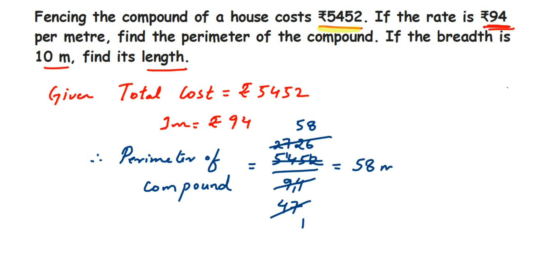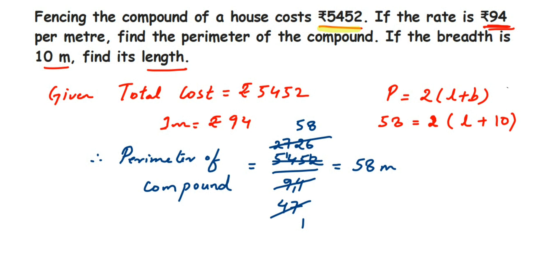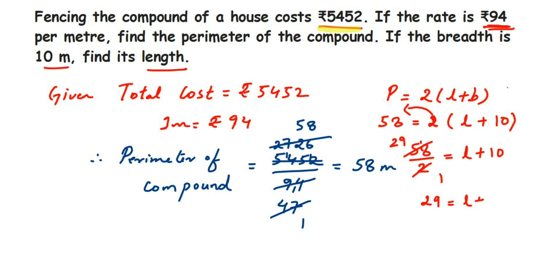Now using the perimeter, we find the length. Perimeter of rectangle = 2(l + b), so 58 = 2(l + 10). Transposing 2: 58 ÷ 2 = l + 10, giving 29 = l + 10. Transposing 10: l = 29 − 10 = 19 meters.